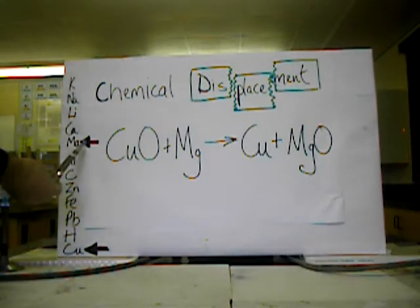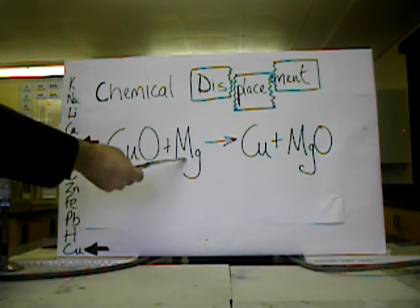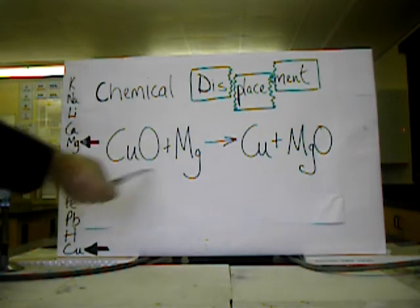The magnesium, which is higher up in the reactivity series than copper, is capable of displacing copper from its compound, copper oxide. This will give us copper and magnesium oxide.